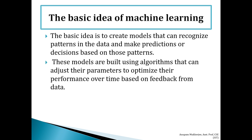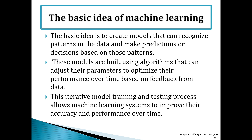These models are built using different algorithms that can adjust their parameters to optimize their performance over time. Machine learning is generally categorized as supervised, unsupervised, and reinforcement learning. Based on feedback from data, the system tries to improve its accuracy, and this iterative model training and testing process allows machine learning systems to improve their accuracy and performance.